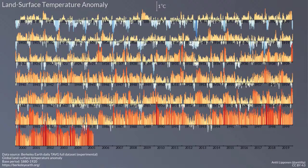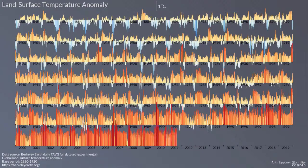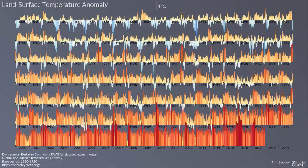When we get to 1996, from 1996 through to the end of this record — which I believe is at the end of 2018 — there is only one cold monthly anomaly through that entire period from 1996.